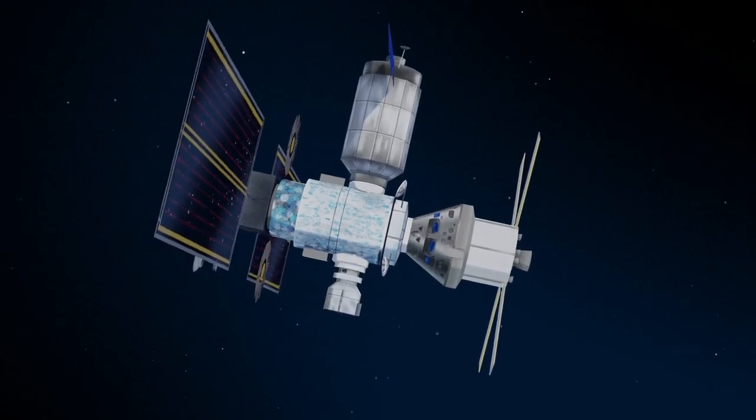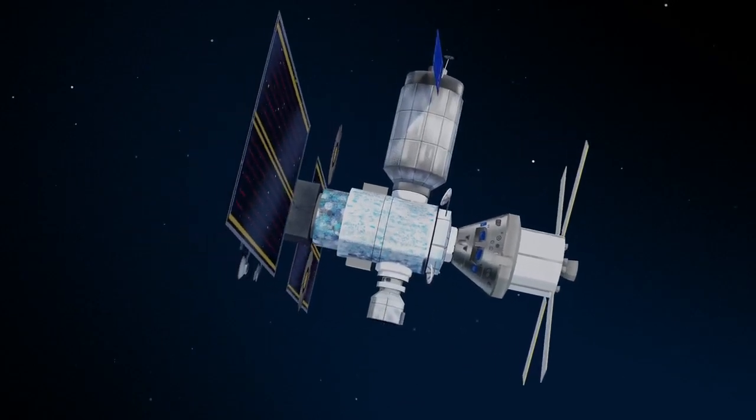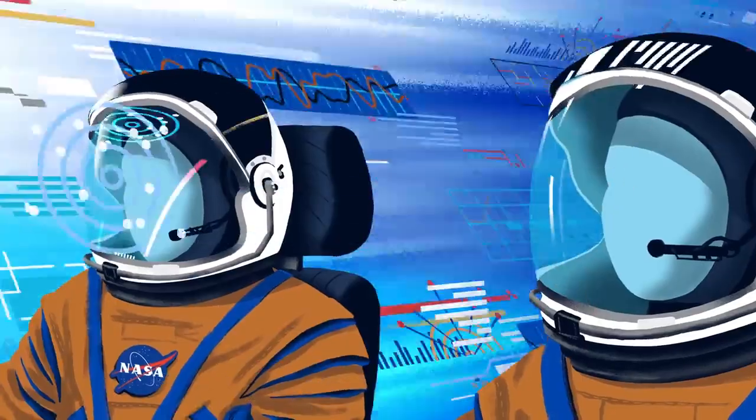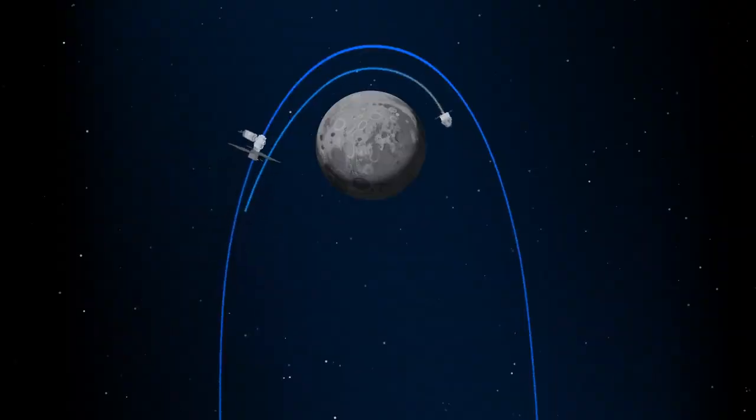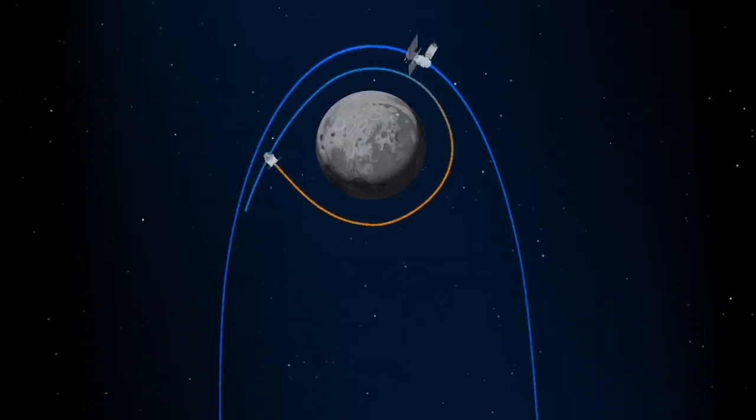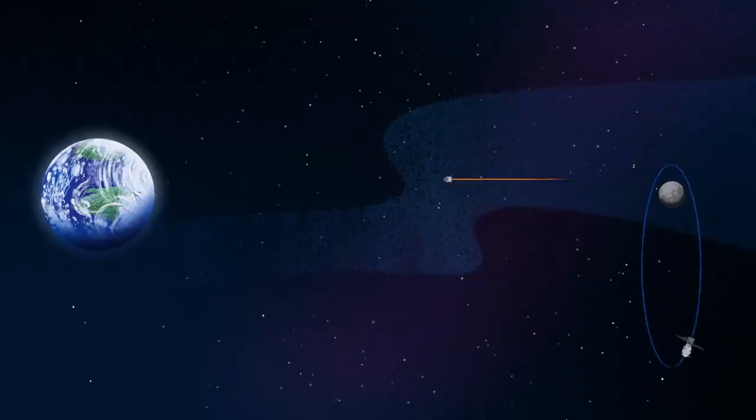Once back aboard the Orion spacecraft and undocked from Gateway, the crew fire their engine once to break out of the halo orbit, and once again to sling the spacecraft around the Moon, placing it on a multi-day trajectory back towards Earth.